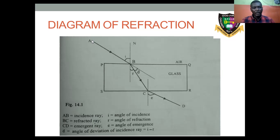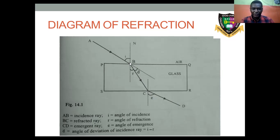Our light is traveling from A to B. It's refracted in the second medium, then it emerges. Our refraction is this: light BC bends towards the normal.